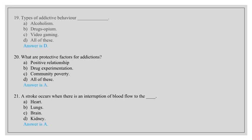What are protective factors for addictions? Positive relationship, drug experimentation, community poverty, all of these. Answer is A, positive relationship. A stroke occurs when there is an interruption of blood flow to the heart, lungs, brain, kidney. Answer is A, heart.